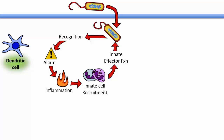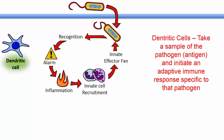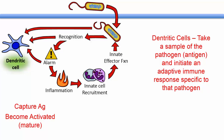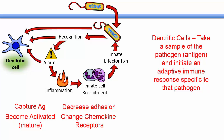As a specialized type of phagocyte, these cells take a sample of pathogens and use this to initiate an adaptive immune response. They capture pathogen antigens, and in response to pattern recognition receptor stimulation or alarm signals, become activated. Once activated, they let go of the surrounding tissues and change their chemokine receptors in a way that allows them to migrate.